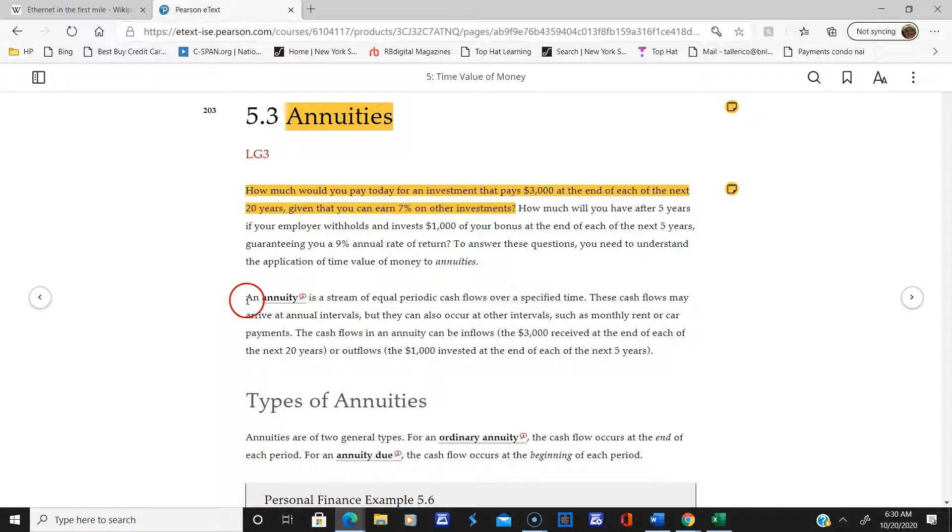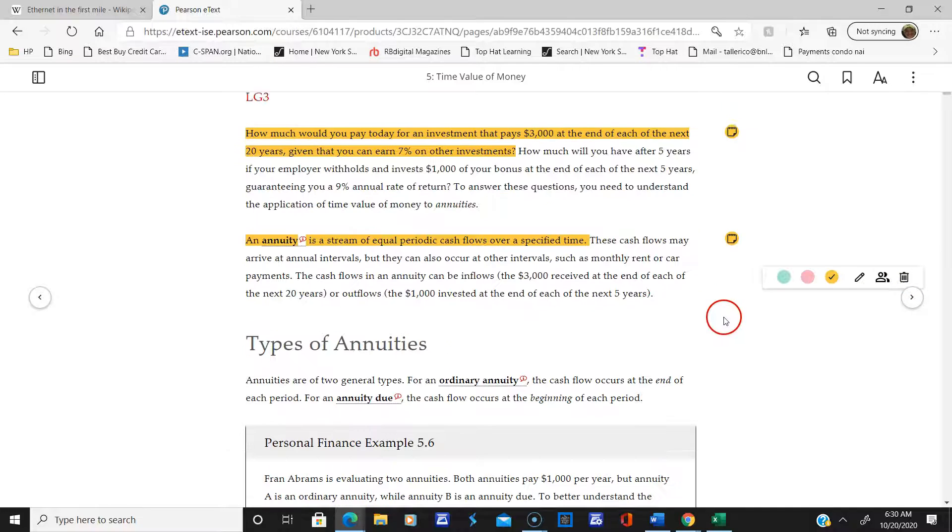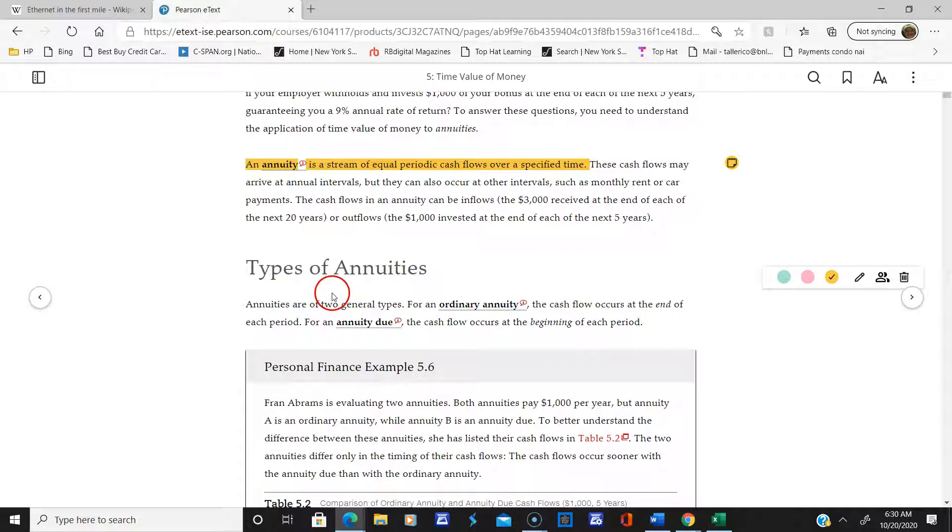The definition is a stream of equal periodic cash flows over a specified time. They arrive at annual intervals but can also occur at other intervals such as monthly rent or car payments.